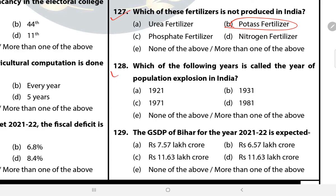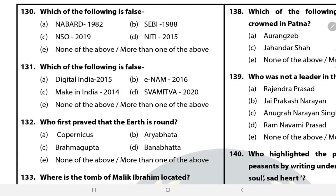Question 128: Which of the following years is called the year of population explosion in India? Answer — 1921. Question 129: The GSDP of Bihar for the year 2021-22 is expected to be 7.57 lakh crore. Question 130: Which of the following is false? The answer is none of the above — all these are true.